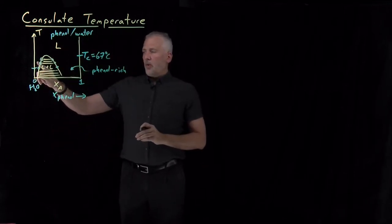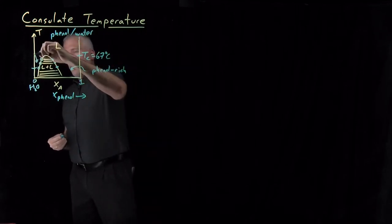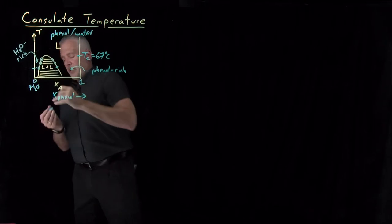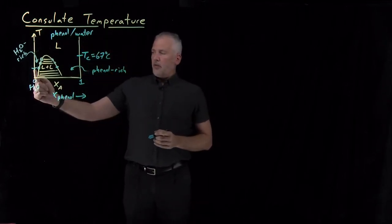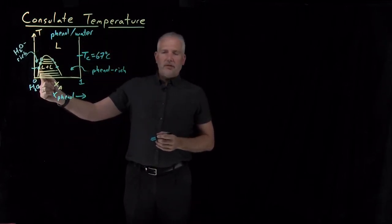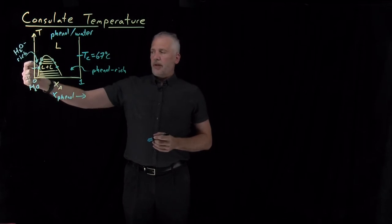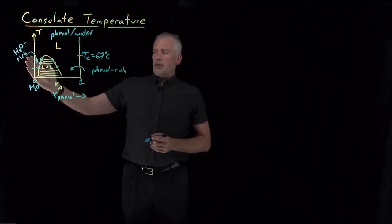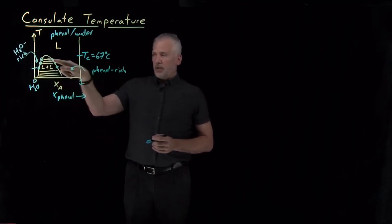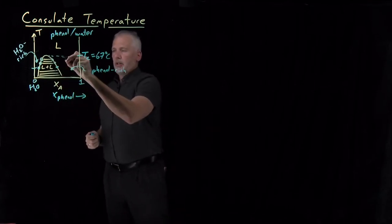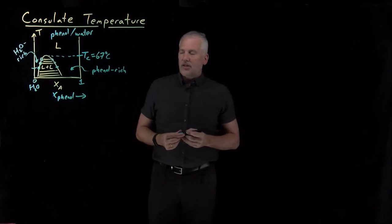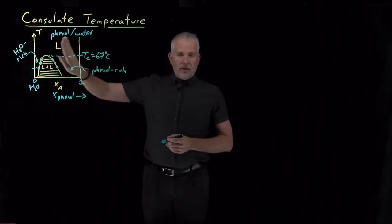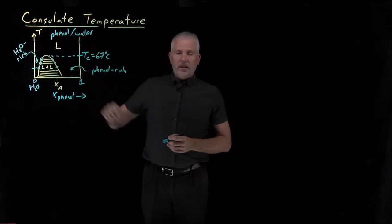In the water-rich phase — nearly pure water — I can dissolve a mole fraction of a few percent of phenol at a given temperature. If I raise the temperature a little bit, I can dissolve a little bit more phenol, and if I raise the temperature more, I can dissolve even more phenol. Once I get to the consulate temperature of 67 Celsius, I can dissolve an infinite amount of phenol into water, or an infinite amount of water into phenol.